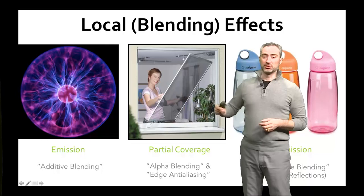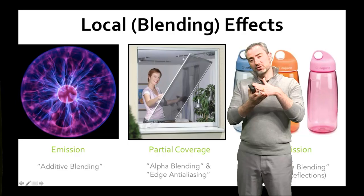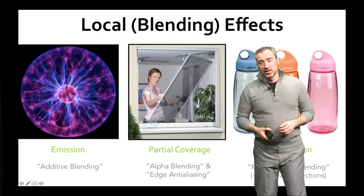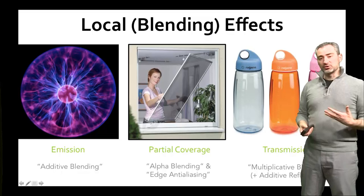There's partial coverage, which includes cases like a window screen and edge anti-aliasing, where a polygon cuts through the middle of a pixel, and the case of really thin surfaces like a telephone wire. And of course there's transmission for things like glass or clear plastic, which has a full color associated with it.